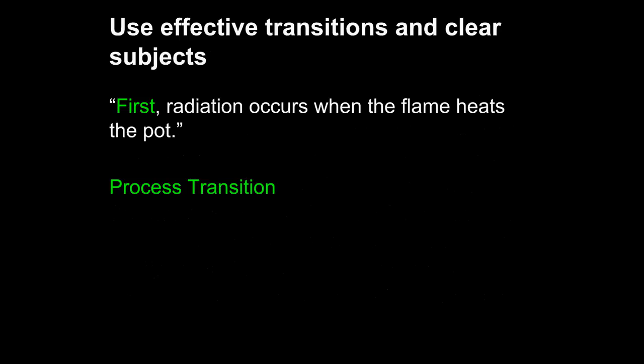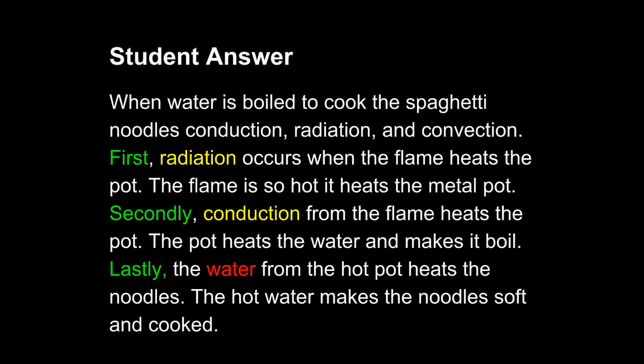The process transition language is effective for describing the causal chain. What about clear subjects? Radiation seems to be a specific subject — it is a concept under discussion in the scientific class. She does this for two of the three sentences: first, radiation; secondly, conduction; lastly, the water. We can see that she has broken from her pattern with this last step of the causal chain. Instead of discussing the water, she should discuss convection. So, if the student wishes to keep the pattern intact and make sure the paragraph has integrity, she will use the specific subject of convection with the last step of the causal chain.